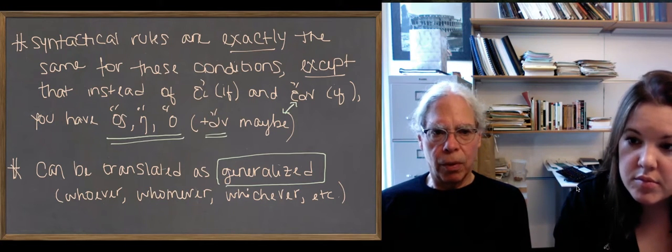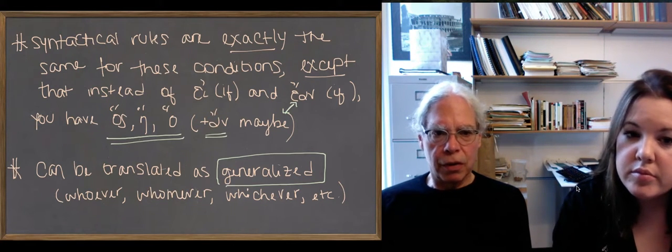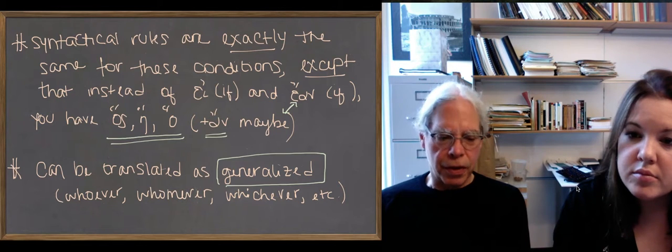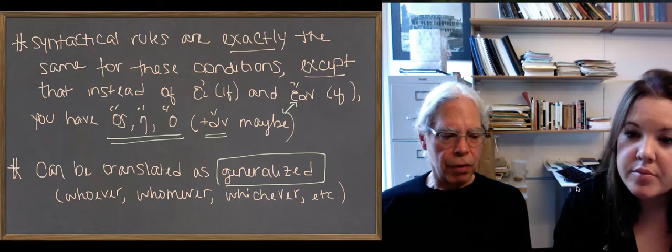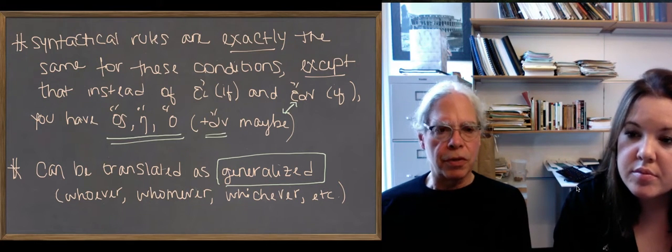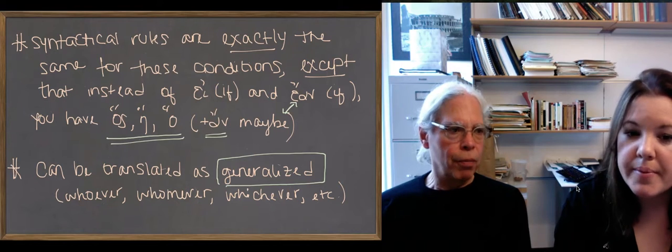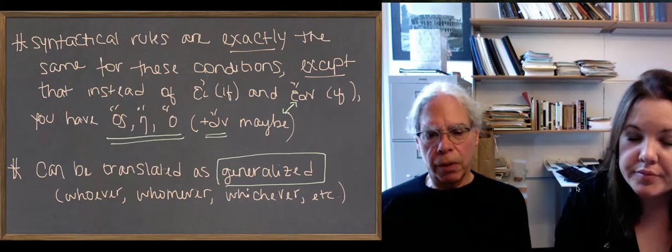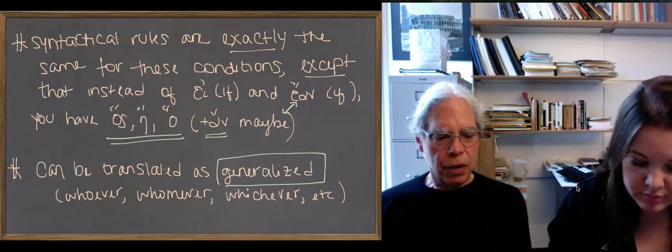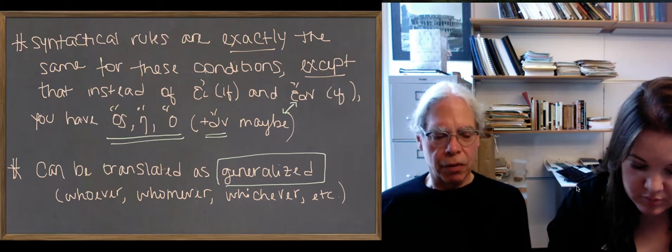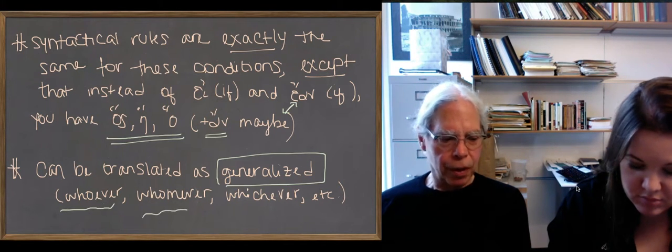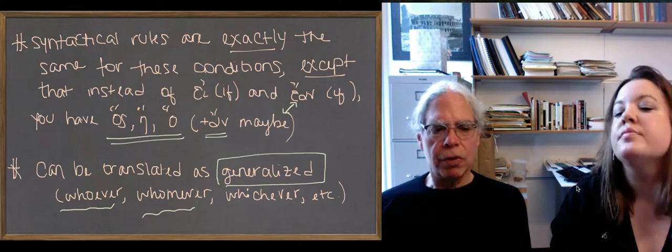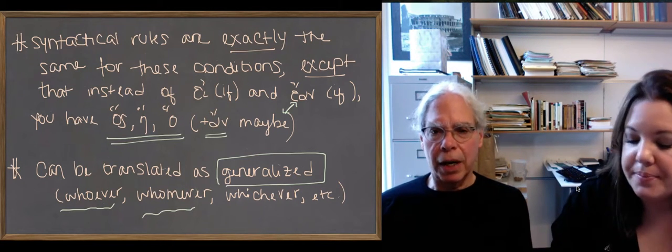And again, what we think is that you can translate the relative pronoun itself. This is probably the most effective way of doing it, is to translate the relative pronoun in these conditions with whoever, whomever, whichever. We're also going to see that for some of them, you need to actually translate the relative pronoun as anyone or someone, whatever works, and introduce the word if. We'll come back to this example.